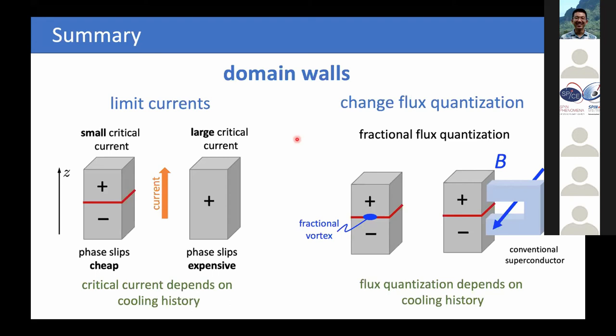In summary: domain walls limit critical currents, and they limit current especially efficiently when the domain wall lies in the basal plane — i.e., when the normal vector is along the C-axis, since these are the cheapest domain walls. The reason is that since the phase coupling is weak, the vortices created are very spread out and cheap, leading to cheap phase slips. Without domains, the critical current would be large and phase slips expensive.